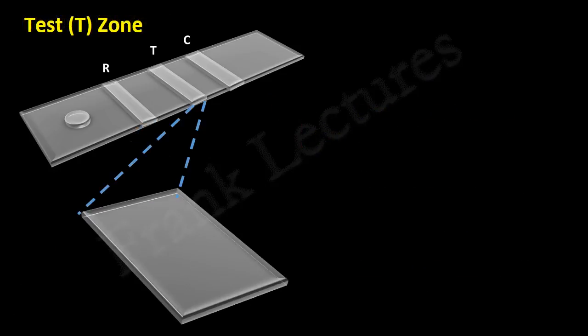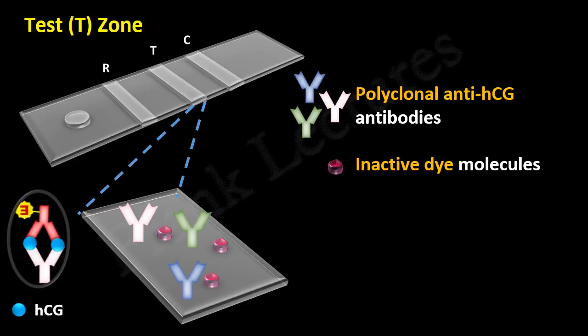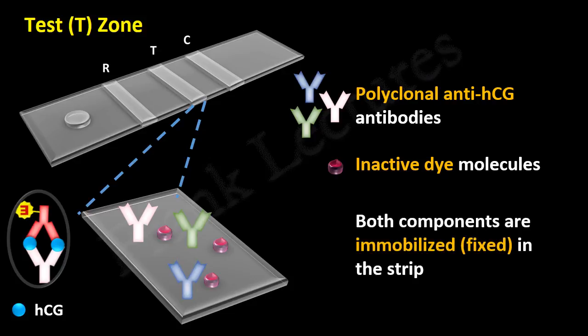Zooming into the test zone, we find it comprises two components: polyclonal anti-HCG antibodies and inactive dye molecules. The antibodies in the test zone also recognize and bind HCG molecules, and are also produced in mouse. However, these test zone antibodies are polyclonal — meaning they are of heterogeneous specificities and recognize different epitopes on the same HCG molecule. These epitopes are different from those recognized by the monoclonal antibodies of the reaction zone. The second component, the inactive dye molecule, is the substrate for the enzyme present in the reaction zone and will take part in the color reaction. Both components are immobilized in the test zone and cannot be detached.